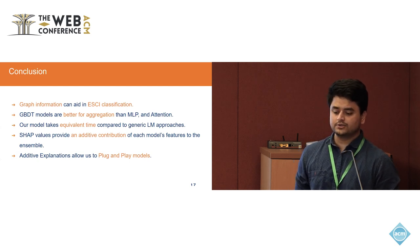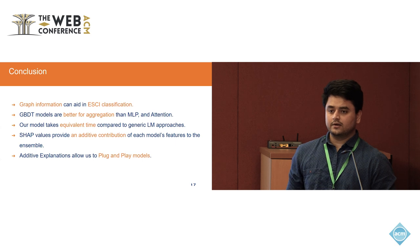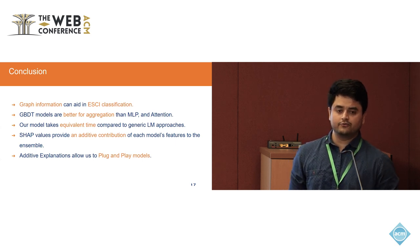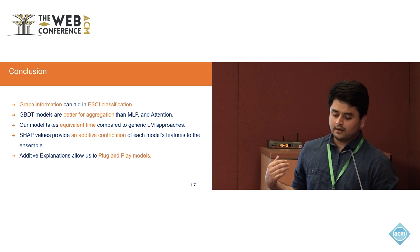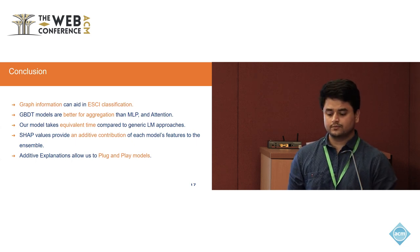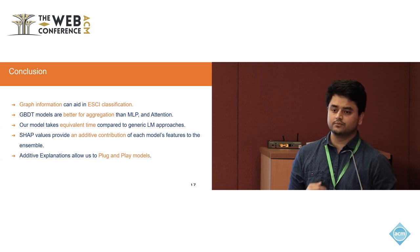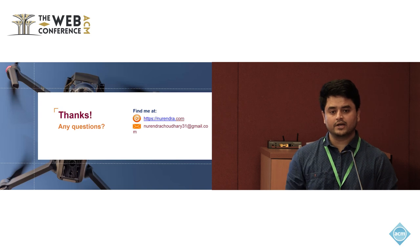In conclusion: graph information can definitely aid ESCI classification. GBDT models are generally better than MLP or attention for aggregation. This model takes an equivalent amount of time as generic LM approaches because it can be parallelized, and the GNN steps are not very time consuming. SHAP values provide an interpretable way to understand which models to use or deploy in production. Those additive explanations allow us to plug and play models as research improves in those particular areas. Thanks — feel free to contact me at the provided email if you have questions.